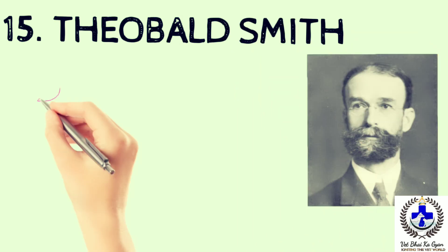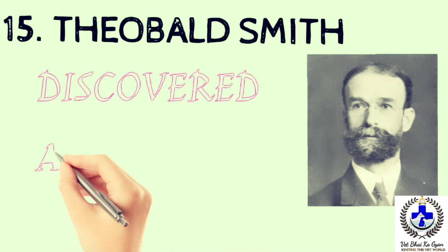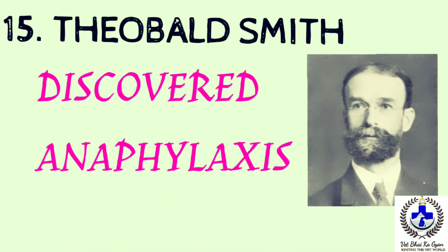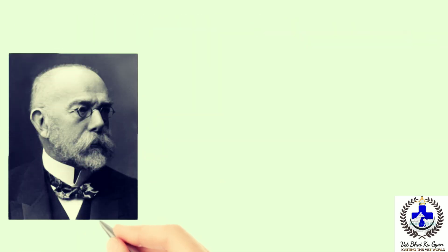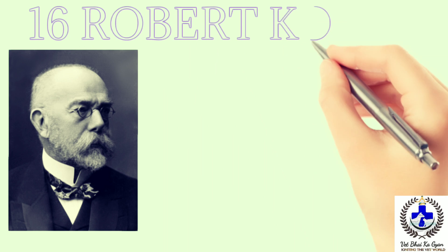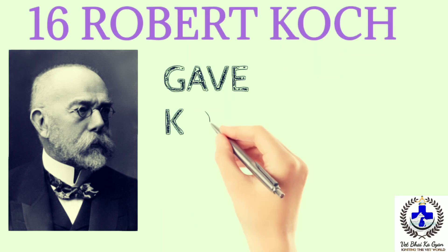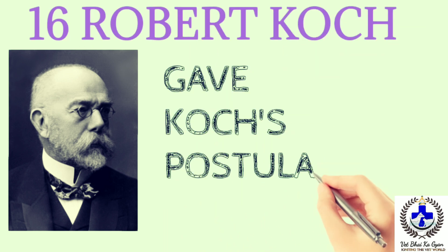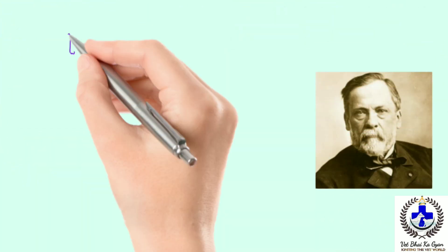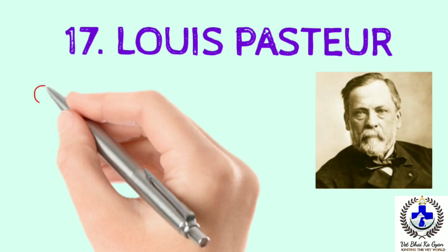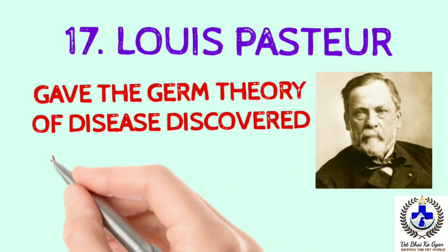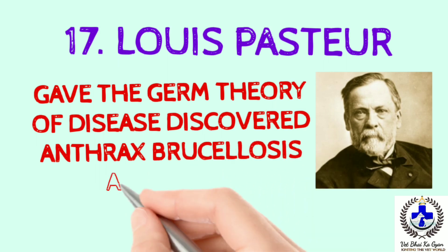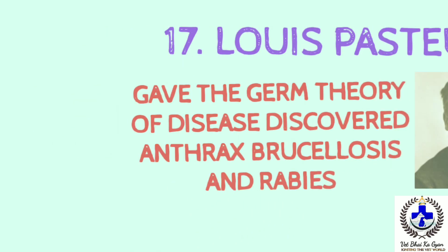Next we talk about Theobald Smith — he discovered anaphylaxis. Next scientist is Robert Koch — he gave Koch's postulates, which are very famous. Next we know about Louis Pasteur — he gave the germ theory of disease and discovered anthrax, brucellosis, and rabies.